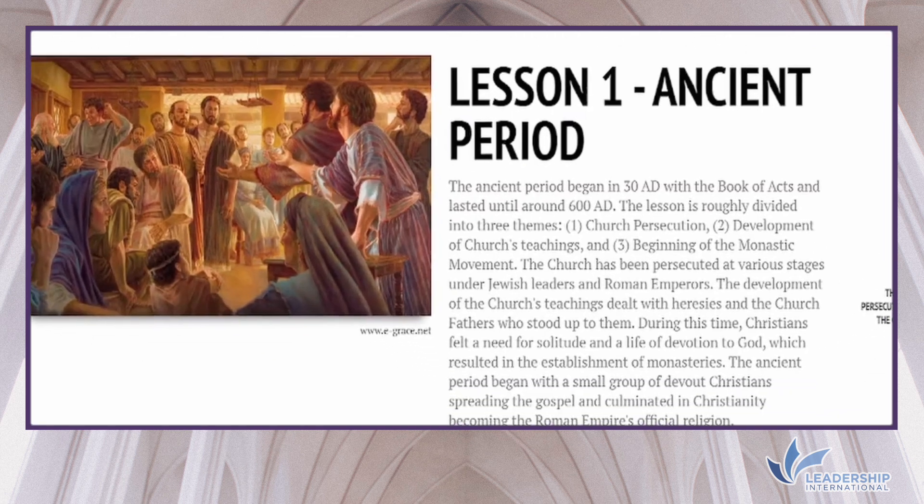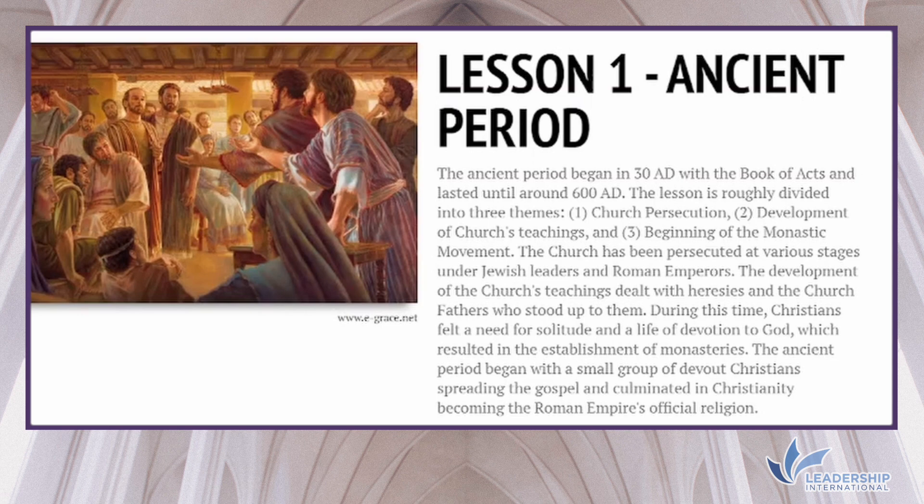Lesson 1 covers the ancient period, beginning with the book of Acts and lasting until 680 AD. The lesson is roughly divided into three themes: the persecution of the church, the development of the church's teachings, and the beginning of the monastic movement. The ancient period began with a small group of devoted Christians spreading the gospel and culminated in Christianity becoming the Roman Empire's official religion.